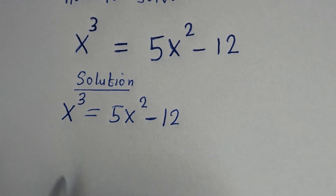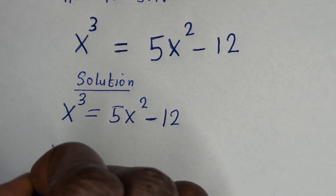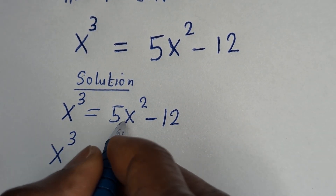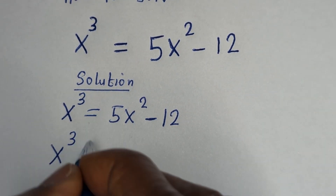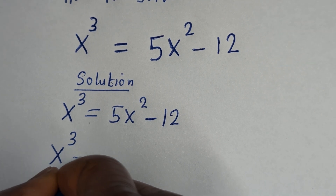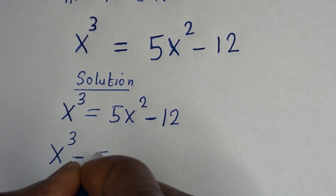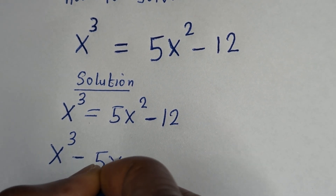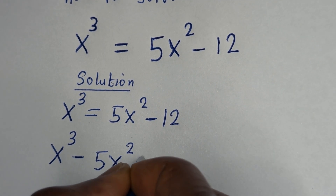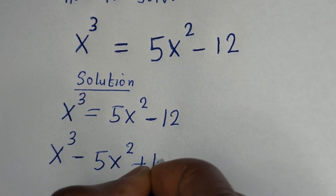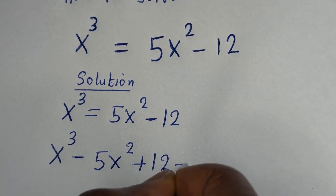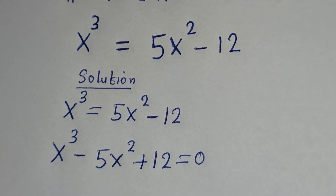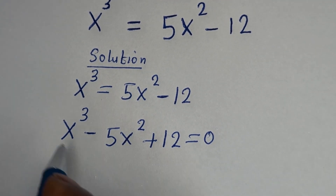The next step is to bring all terms to one side: s raised to power 3 minus 5s squared plus 12 is equal to 0. Now let's test this.